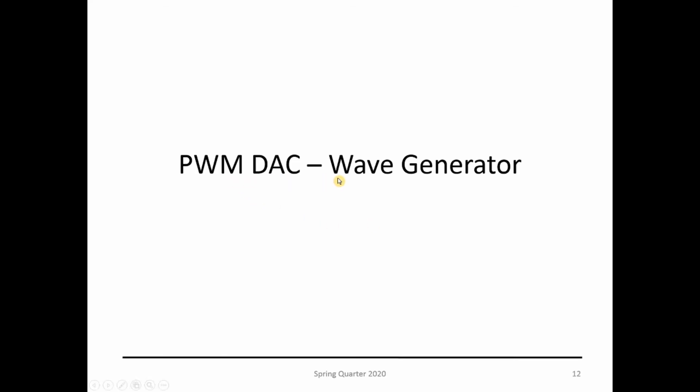Now let's cover PWM DAC as a wave generation. The previous video shows an analog value putting out on the DAC, but what if I want to generate a sine wave or a triangle wave? So what do I need to do?